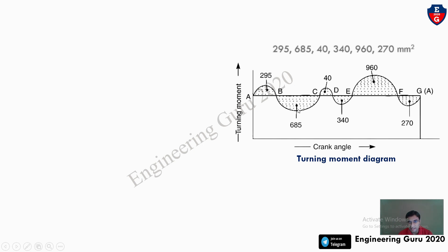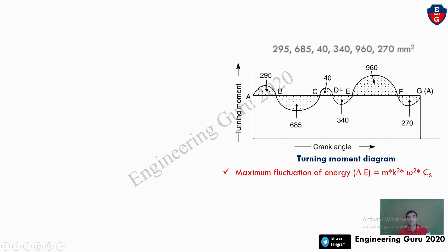Then the second value is negative (below the mean line): 685. Then 40 positive, 340 negative, 960 positive, and 270 negative. This completes the turning moment diagram.